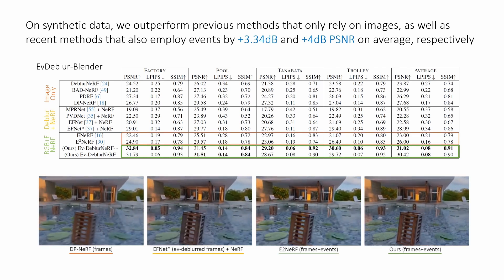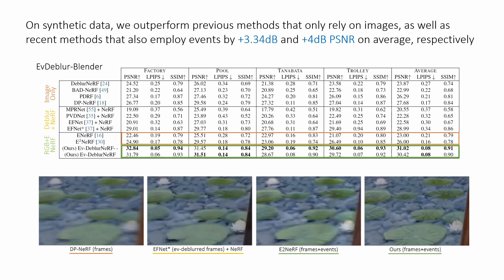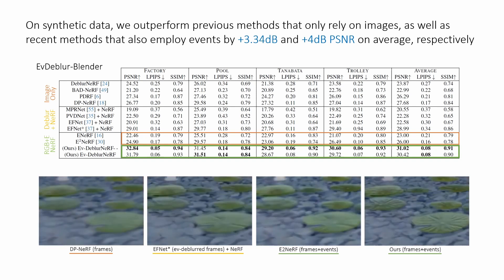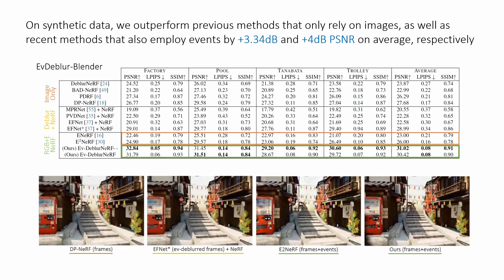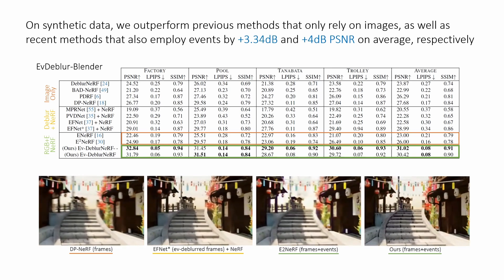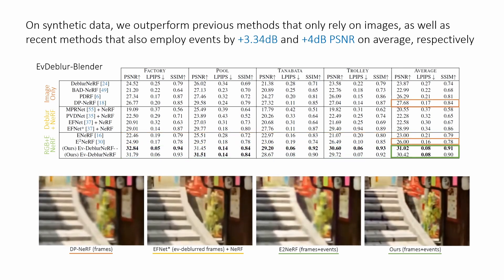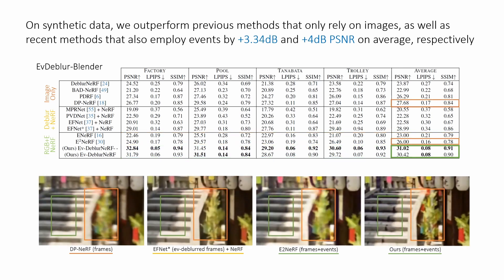Additionally, we surpass recent event-based NERF formulations such as ENERF, which does not explicitly model motion blur, and E2NERF, which only utilizes events during image exposure without leveraging additional priors and learnable response functions. Our method achieves approximately 3 dB higher PSNR than image-only methods and 4 dB higher than event-based methods.